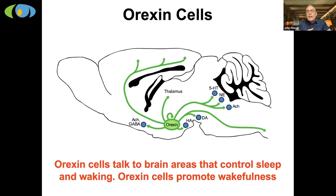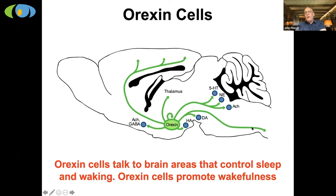What you're looking at here is a section through a mouse's brain. All these little star-like structures are individual brain cells that make a chemical called orexin. This chemical was only discovered in 1999, and scientists were curious — what is this chemical? It's in the hypothalamus, which appears to be important in controlling sleep, and damage to that brain area causes sleepiness and other symptoms similar to those in people with narcolepsy.